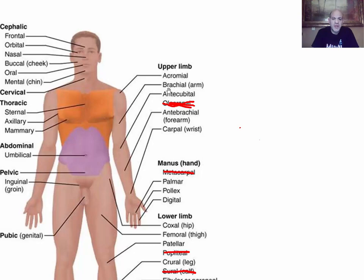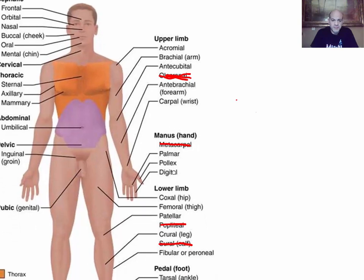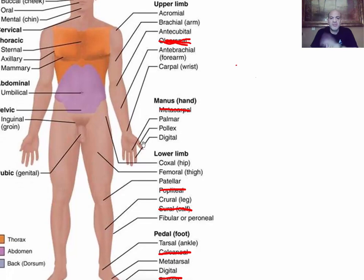The upper arm region where the bicep and tricep are is called brachial. The front of the elbow, where blood is typically drawn, is the antecubital region. The forearm is antebrachial and the wrist is carpal. For the hand, the palm is palmar, the thumb has its own name — pollex — and the fingers are digital.